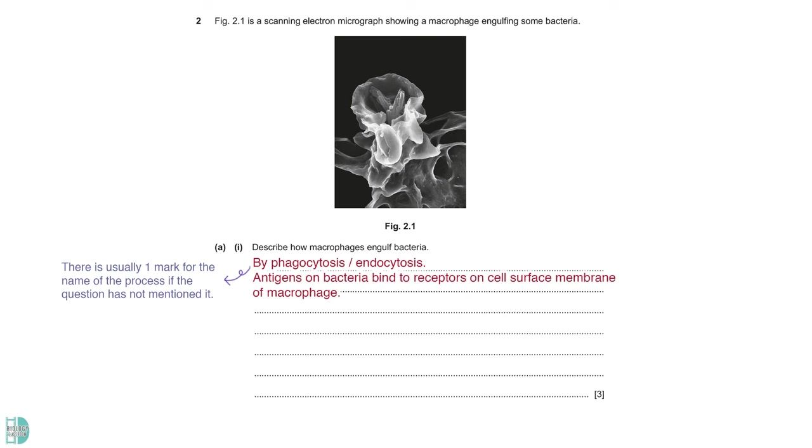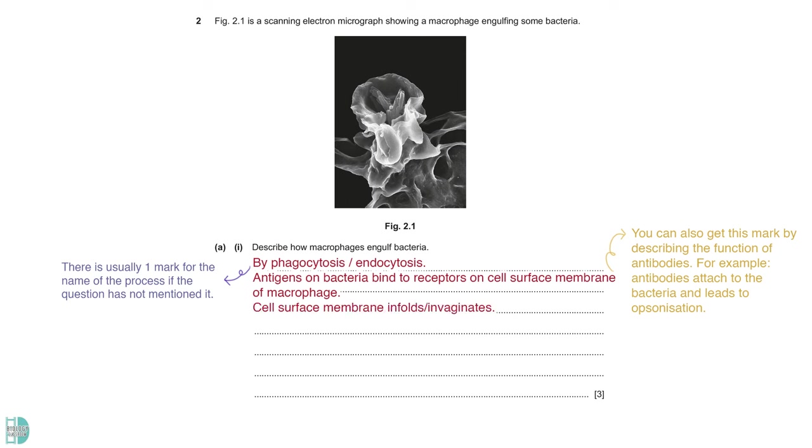Question 2 shows a scanning electron micrograph of a macrophage. A1, describe how macrophages engulf bacteria. Since the question did not name the process, you will get one mark by providing the name. It is phagocytosis or endocytosis. Then write the steps. Firstly, antigens on bacteria bind to receptors on the cell surface membrane of macrophages. Then the cell surface membrane will infold or invaginate. Parts of the membrane will fuse. A phagosome is formed inside the cell. This process requires ATP or uses energy.